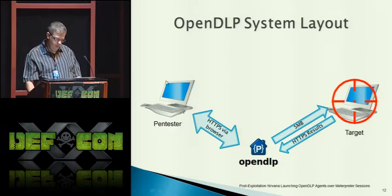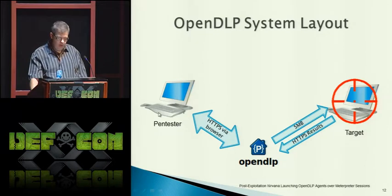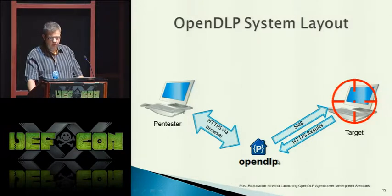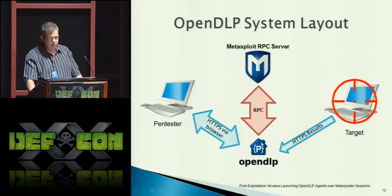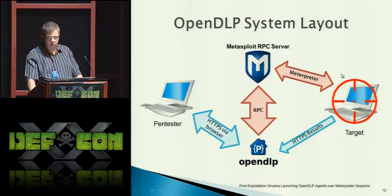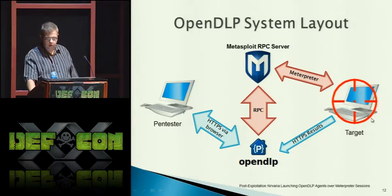Here you can see the typical OpenDLP setup as it is now: the pen tester hits OpenDLP via browser, which deploys with SMB. Periodically the agent posts back results to OpenDLP and tells it when it's finished, and it will be uninstalled by SMB. We replaced that with RPC communications to the Metasploit RPC server. We can do all the exact same things over this RPC — create directories, copy files, start services via sc.exe — and the agent still posts back via HTTPS.